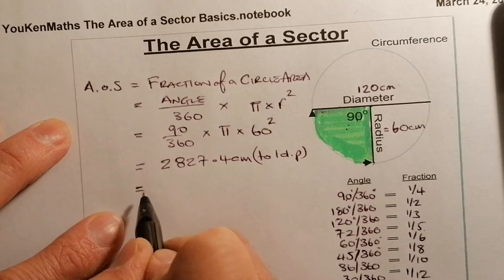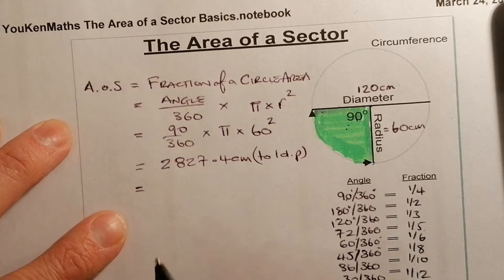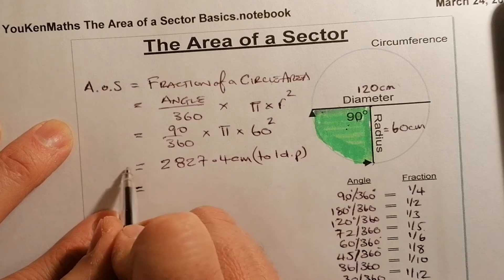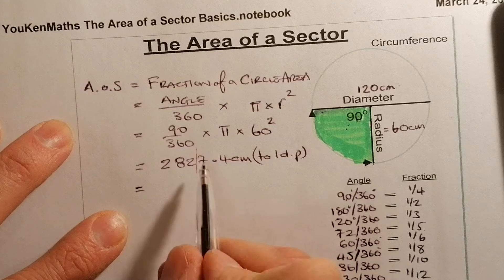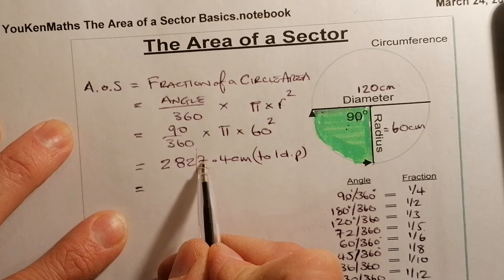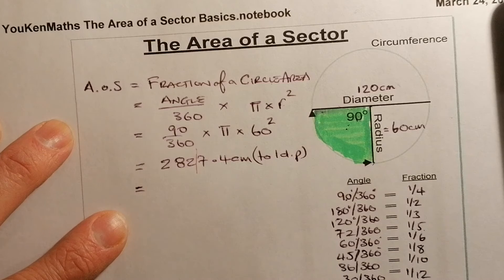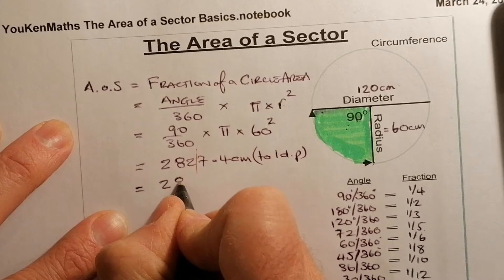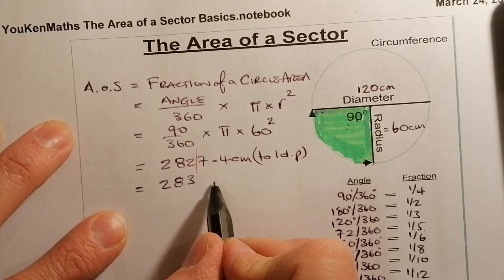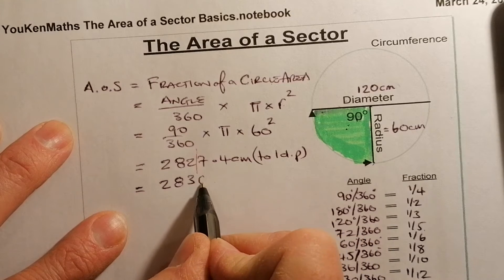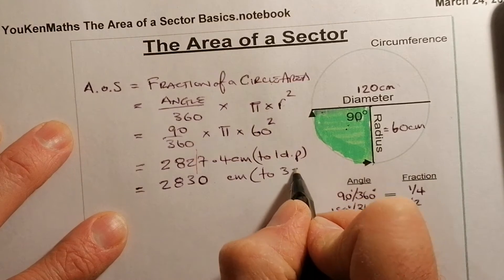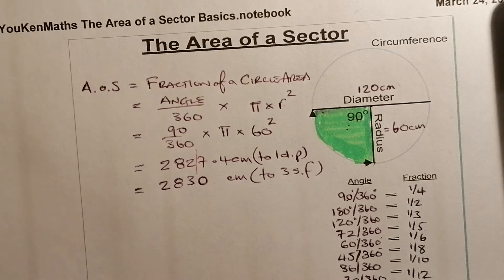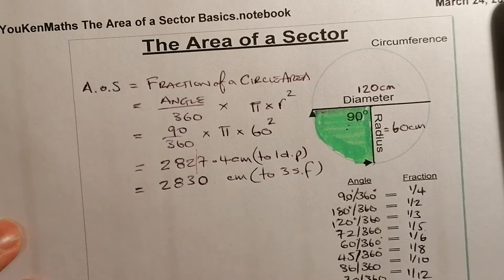Sometimes you'll be asked to round to significant figures. To round 2827.4 to three significant figures, I count in from the left: one, two, three — so I draw the line after the second 2. The 7 to the right rounds that 2 up to 3, giving me 2830. The decimal point sits further right, so I put a zero in to show its position. The answer is 2830 centimetres squared to three significant figures.